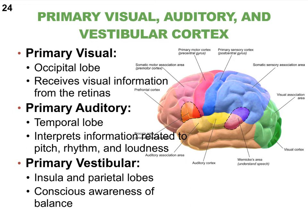Knowing your special senses helps you remember your primary sensory areas: the primary somatosensory area for touch, primary visual area, primary auditory area, primary vestibular area, and a primary gustatory area for taste. Some of your images do not always include the term 'primary' — for instance, the slide should say primary auditory cortex and primary visual cortex.